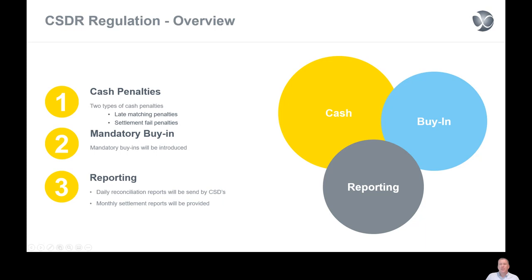But what is this CSDR regulation now actually? A significant component of the CSDR regulation is the introduction of a harmonized cash penalties regime across all European CSDs. It requires that cash penalties be collected by any European CSD from participants that failed to settle, and redistribute that to participants suffering from this settlement failure. Existing local CSD penalty regimes will be replaced by the new CSDR regime. A cash penalty is due for each day of failed settlement as from the end of the intended settlement date up until the date the instruction is finally settled or cancelled.